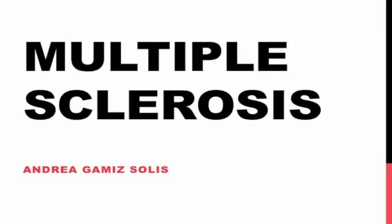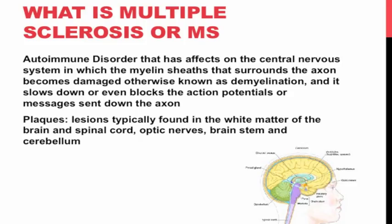Multiple sclerosis, by Andrea Gamis. What is multiple sclerosis, or MS? It is an autoimmune disorder that affects the central nervous system, in which the myelin sheaths that surround the axon become damaged — otherwise known as demyelination. This slows down or even blocks the action potentials, or messages sent down the axon.